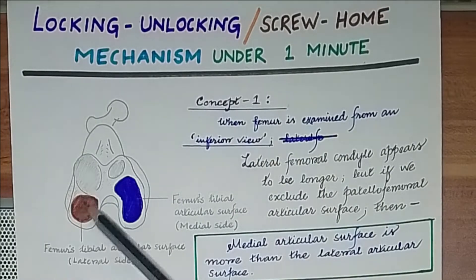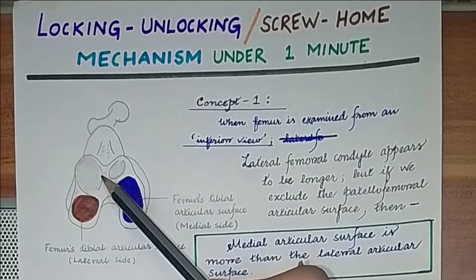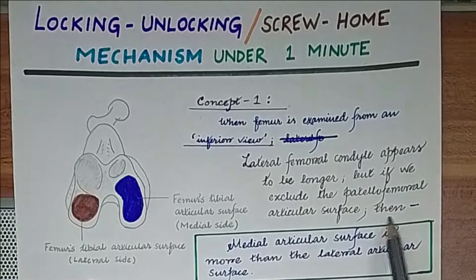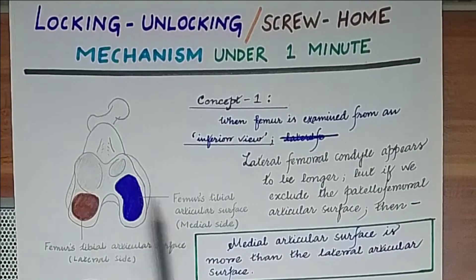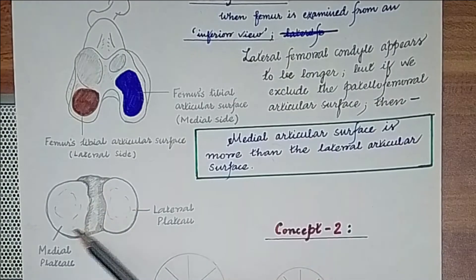The first concept is that when femur is examined from an inferior view, the lateral femoral condyle appears to be longer, but if we exclude the patellofemoral articular surface, then the medial articular surface is more than the lateral articular surface. It also goes with the tibia too.